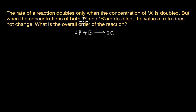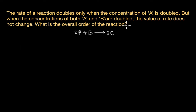Let's solve a question on how to find the order of a reaction. The question says the rate of a reaction doubles when the concentration of A is doubled. But when the concentrations of both A and B are doubled, the value of the rate remains exactly the same — it does not change. So what is the overall order of the reaction? The reaction given to us is 2A plus B forms 3C.